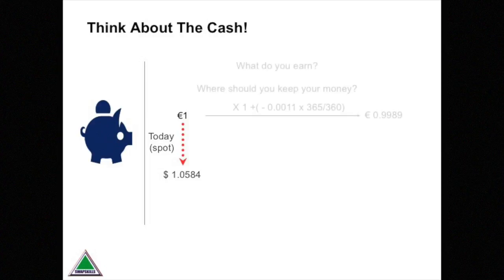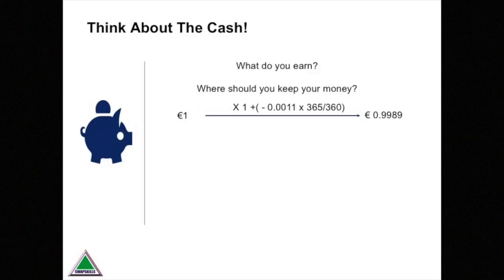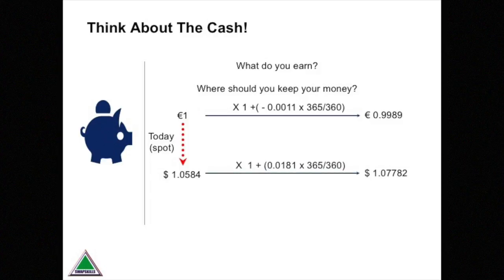There are two things you can do with it. First, you can put it on deposit in the bank and earn a whopping minus 11 basis points, so you actually end up with less than a euro in a year's time. Or, you can walk down to the local money changer and swap it into dollars at today's FX rate of 1.0584. You can earn 1.81% in dollars, so your money will have grown to $1.0778 after a year.